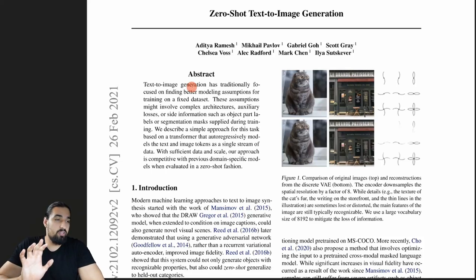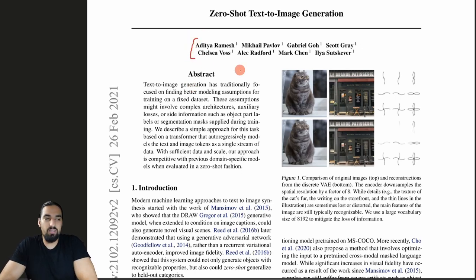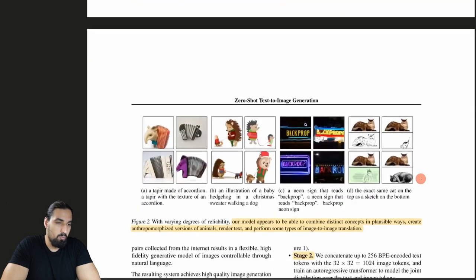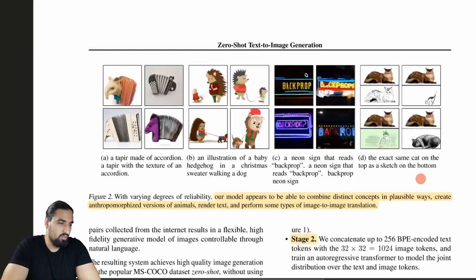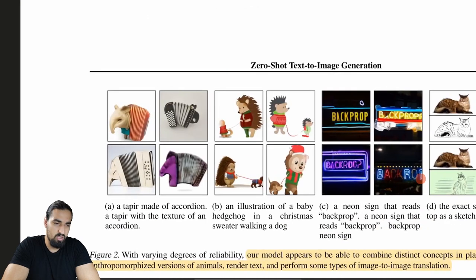In this video, I'm covering zero-shot text-to-image generation from the OpenAI team, or DALL-E for short. This work came out a couple of months ago, but I didn't see anybody covering the paper, so I thought I'd walk you through and explain in detail how this thing works. DALL-E can synthesize awesome images using just textual prompts.